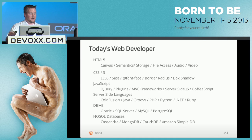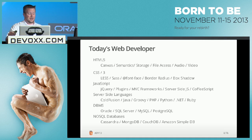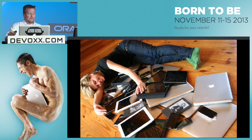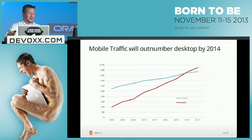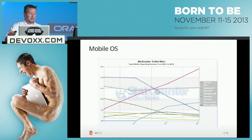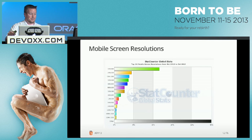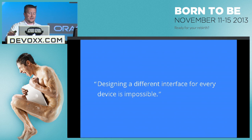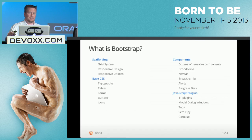Today's web developer has to know HTML5, CSS3, JavaScript, server-side languages, and back-end stuff — there's just a ton. But if you know it all, you're valuable, you'll get good rates and good jobs. And then there's mobile devices. Mobile traffic is going to outnumber desktop traffic by next year, which is why mobile-first is important. Android has taken off, so as a Java developer you could also program Android. Screen resolutions starting at 320x480 are the most popular but getting bigger. Designing a different interface for all these devices is impossible — but luckily Bootstrap is the answer.